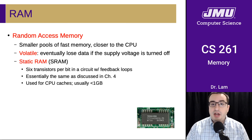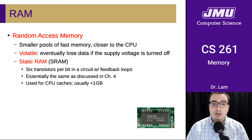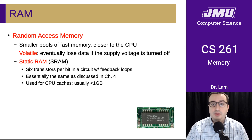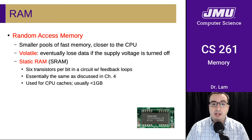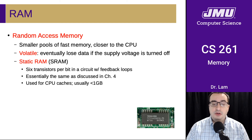The first type is static RAM, or SRAM. This is the type we've already talked about earlier in this module. These use six transistors per bit in a circuit with feedback loops — essentially the same as the flip-flops discussed earlier — and are used for the CPU caches. They are usually less than one gigabyte in size, because they are relatively expensive to manufacture with those six transistors per bit.